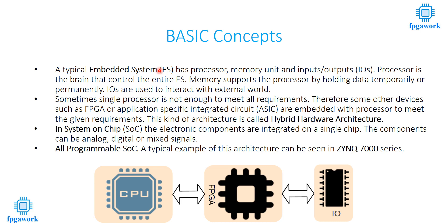The next terminology is hybrid hardware architecture. Sometimes a single processor is not enough to meet all the requirements. So what we do is try to integrate some other units with a processor. A kind of hardware architecture in which a processor system is integrated with some other devices like an FPGA or ASIC is called hybrid hardware architecture.